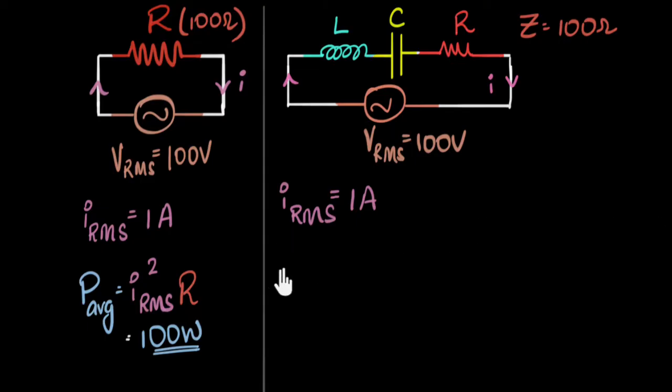Now it might be reasonable to think, just like earlier, here average power might be IRMS squared times total opposition, which is Z. And we might think maybe we end up with the same answer, which kind of makes sense, right? Because I have the same voltage, same current, same opposition as before, everything is the same, so maybe the power distribution also remains the same.